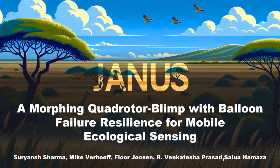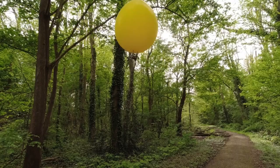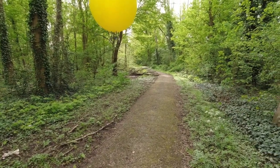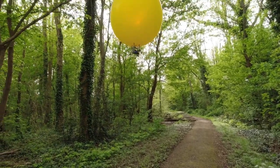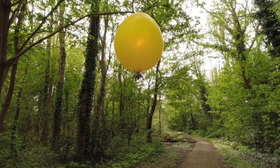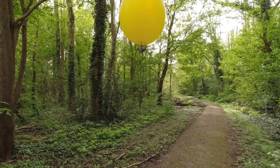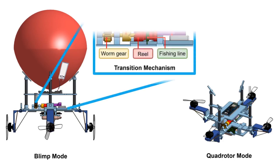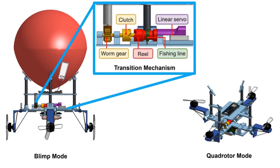Presenting JANICE: a morphing quadrotor blimp with balloon failure resilience for mobile ecological sensing. Our quadrotor blimp hybrid takes inspiration from blimps by leveraging their inherent battery life advantage while also possessing balloon failure resilience. Our platform can morph from a blimp to a quadrotor upon sensing failure and still carry out the mission.